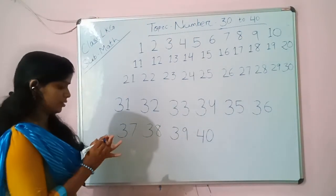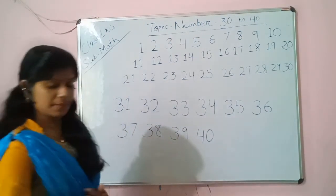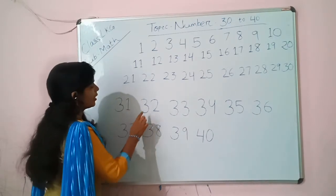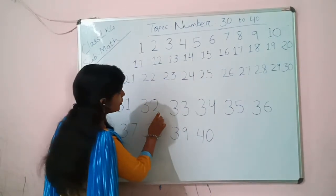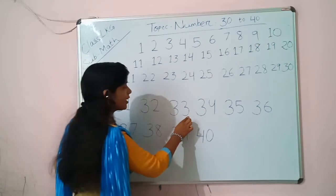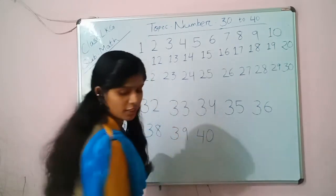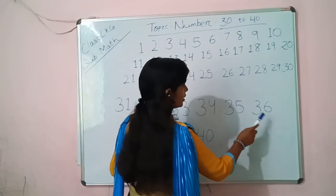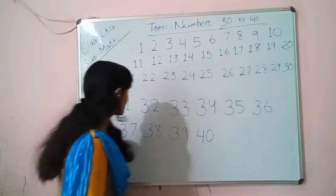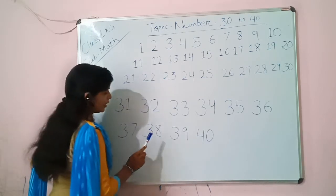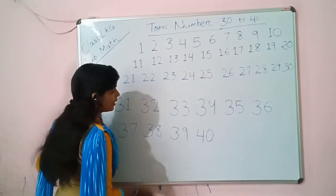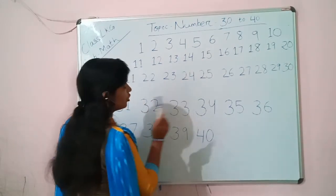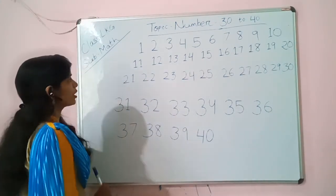Keep the stage by the board here. 3-1-31, 3-2-32, 3-3-33, 3-4-34, 3-5-35, 3-6-36, 3-7-37, 3-8-38, 3-9-39, 4-0-40. Okay, Mojo.